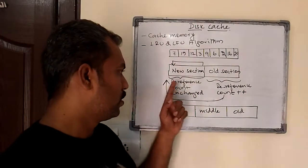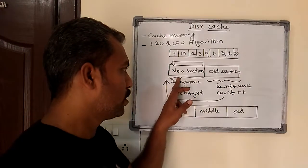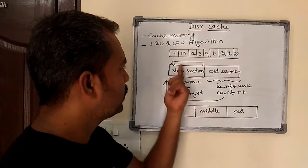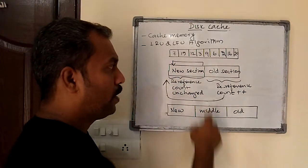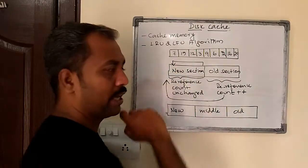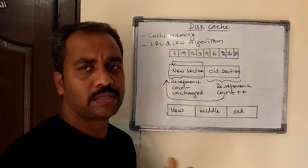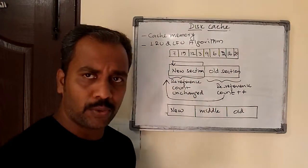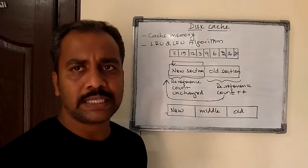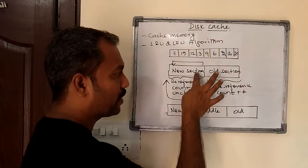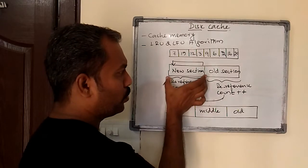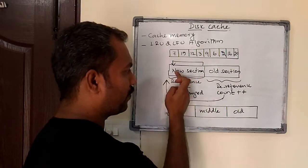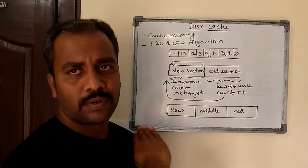In this new policy, the blocks which are found in this new section will not increase their count even if re-referenced, because the pages or sectors found in this new section are quite new — they have just arrived. So there is no point of increasing the frequency count if they are referenced again. The count is unchanged; there will be no change of count.